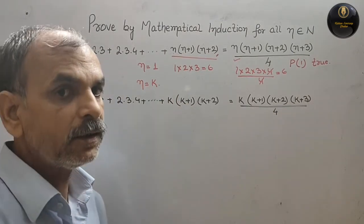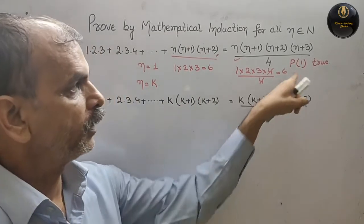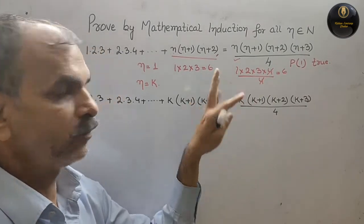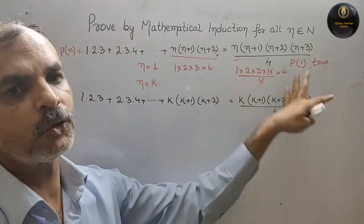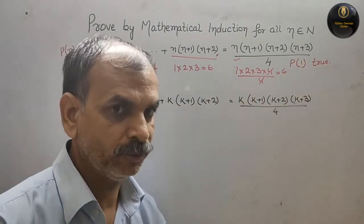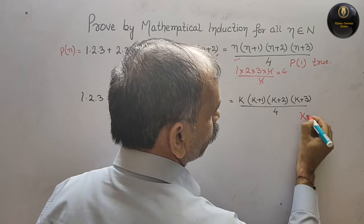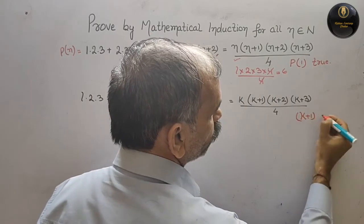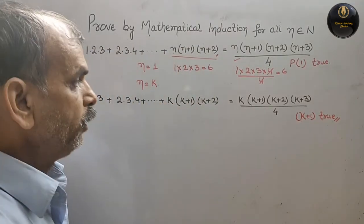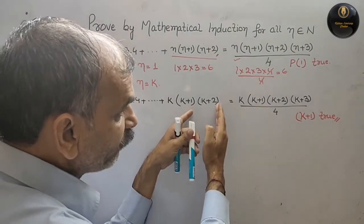Now we have to prove that P(k+1) is also true. We have assumed P(1) is true and P(k) is true. Therefore we need to show P(k+1) holds. To do that, we add the (k+1)th term to the LHS.